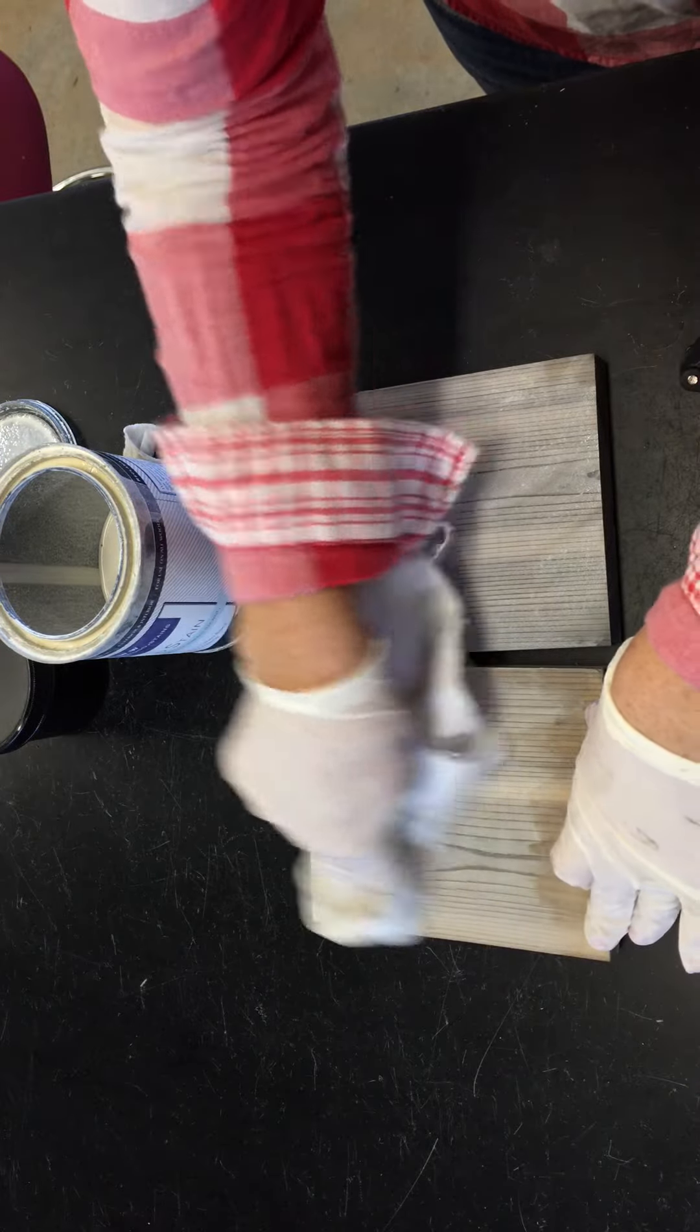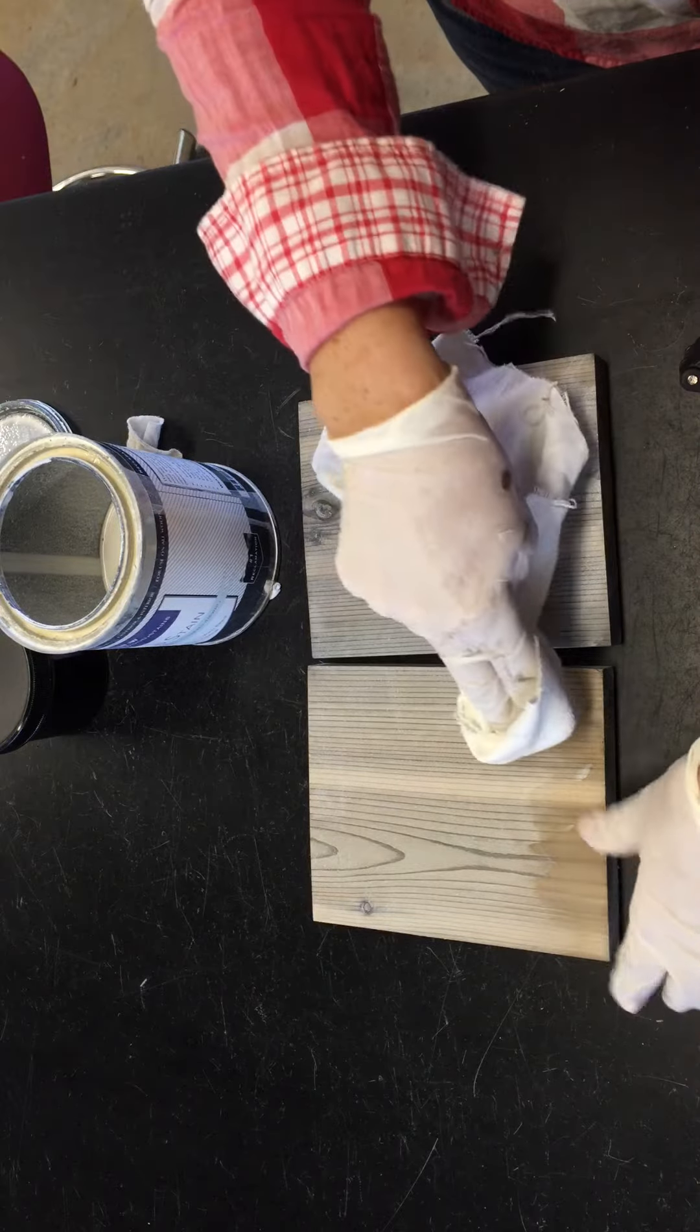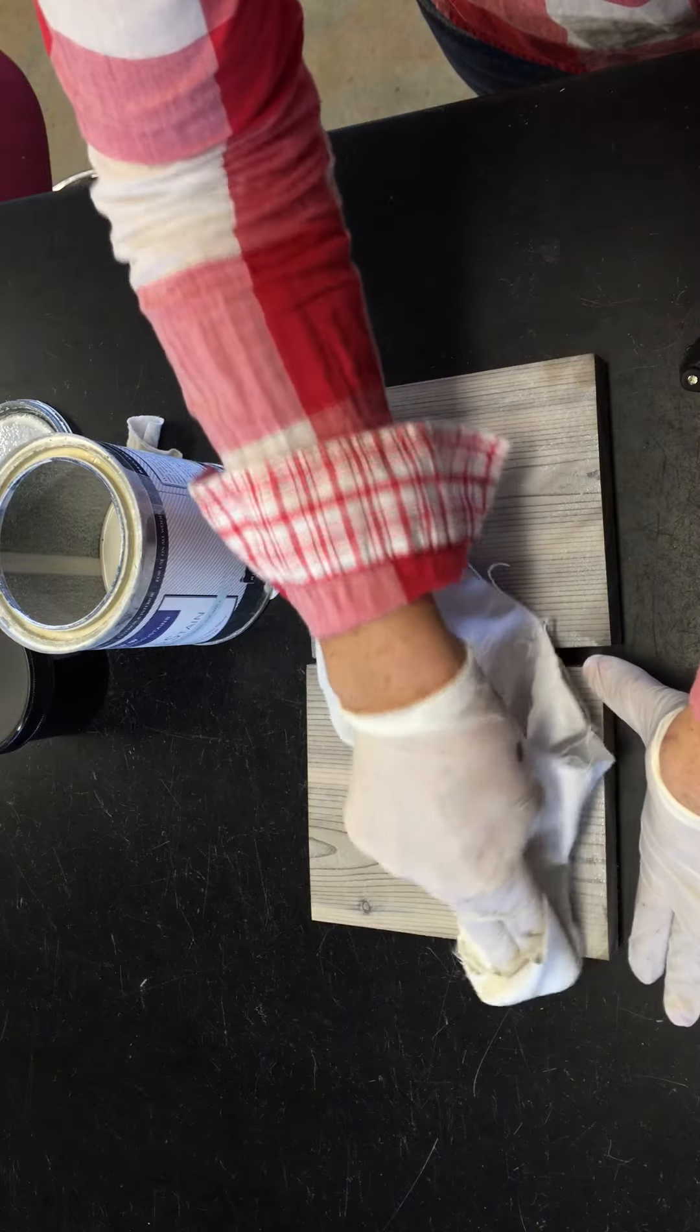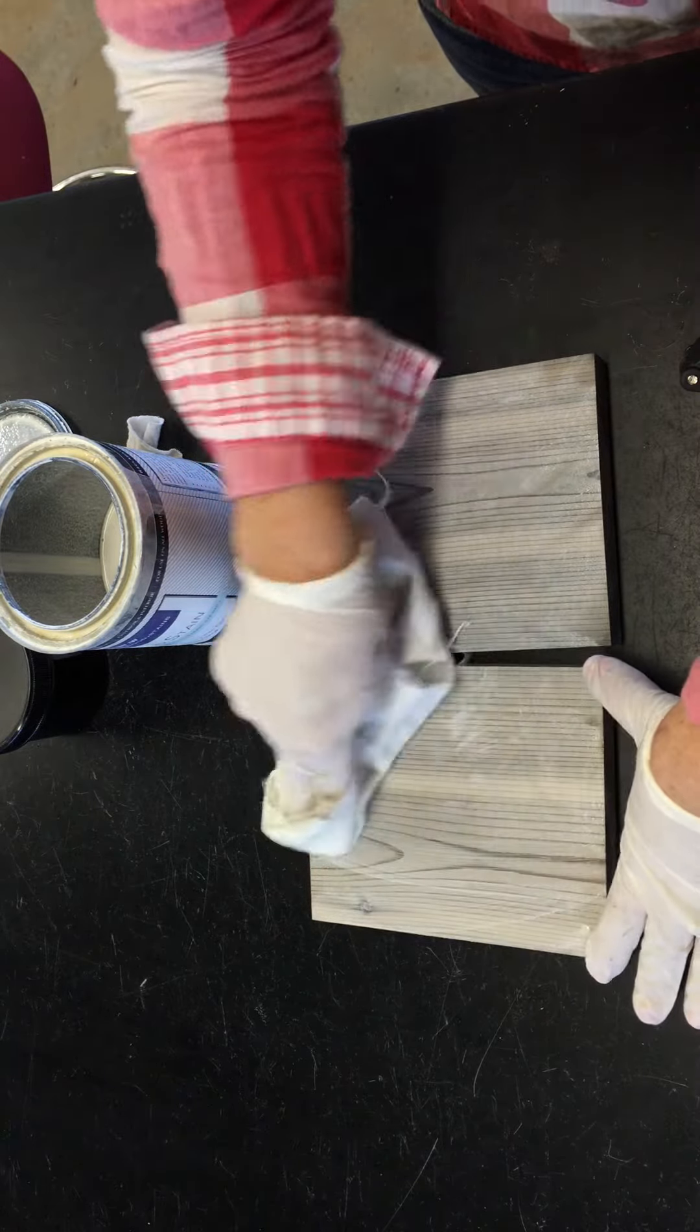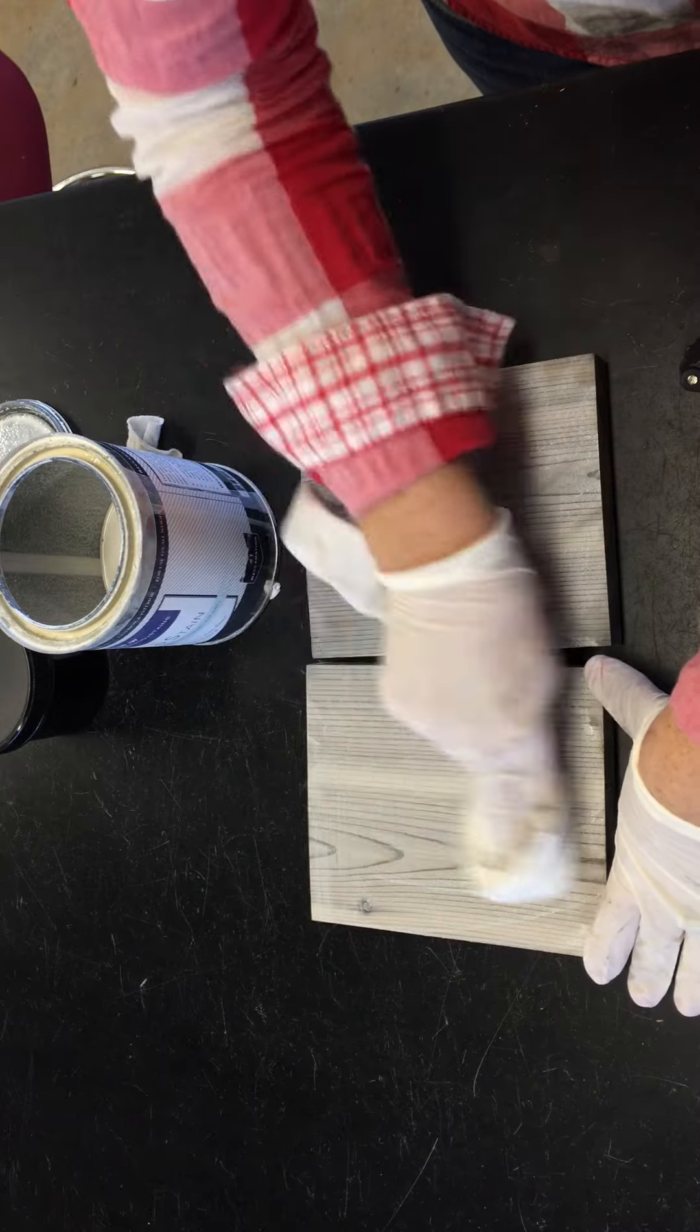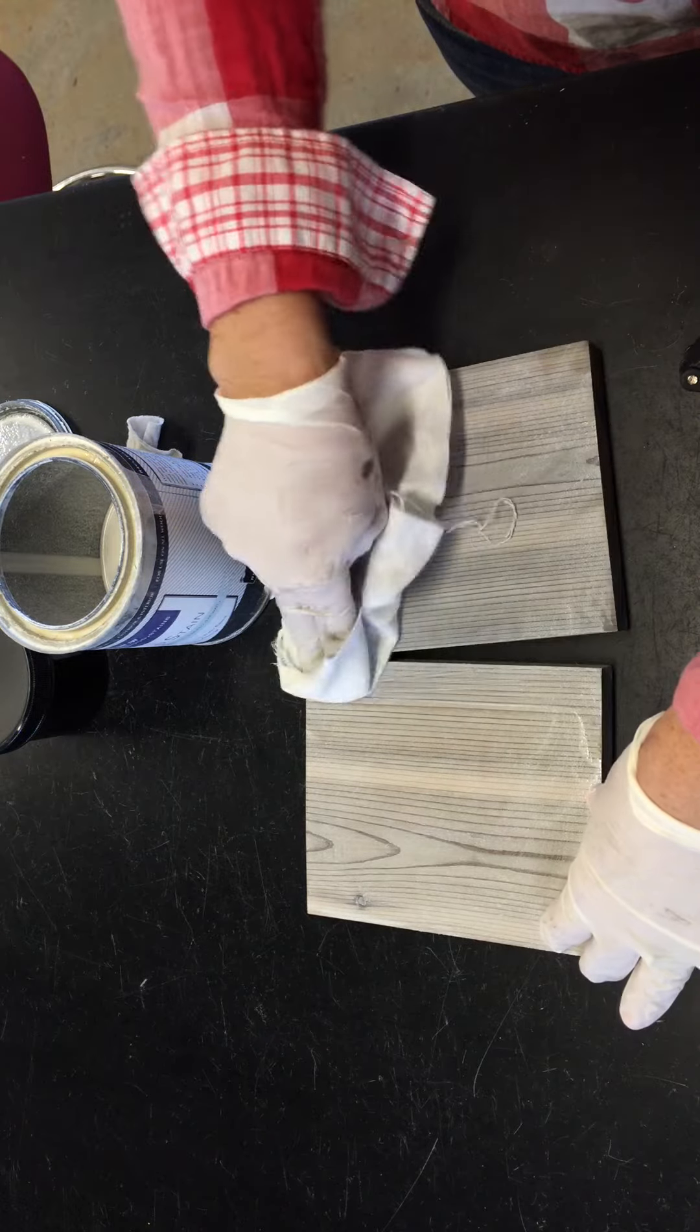Now there's a slight pigmentation to the product and it's going to help you make sure that it's all rubbed in and see where it's at. And then as it dries, it pretty much dries clear. I want to make sure that it's in all the pores of the wood, in all the grooves, so that you have protection at all depths.